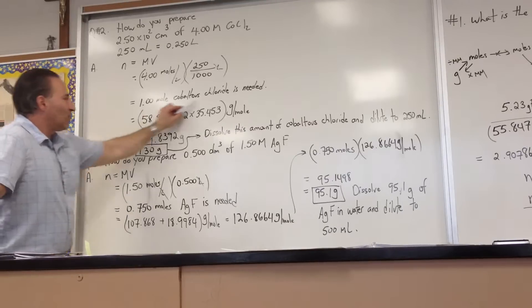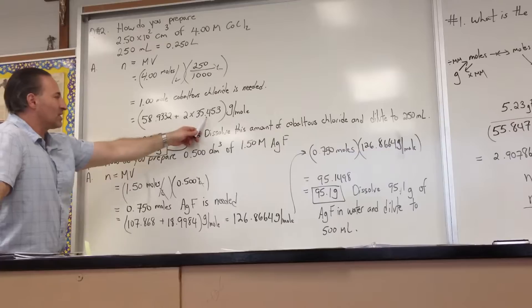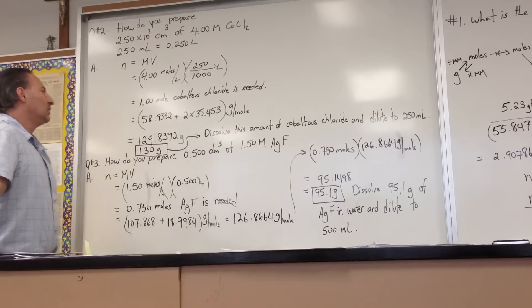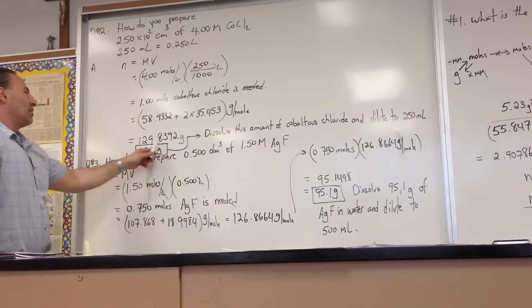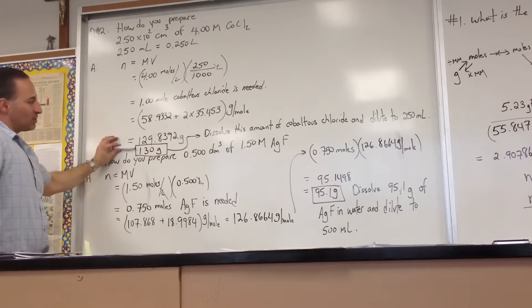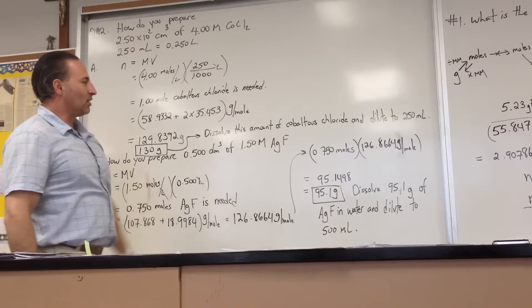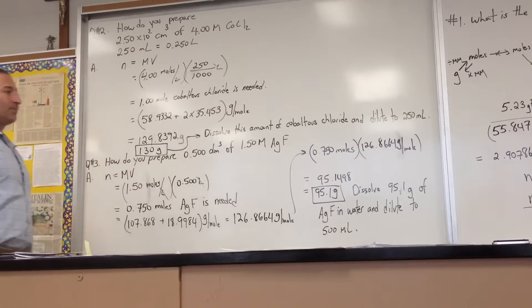We then find out how much one mole of cobaltis chloride weighs. Here's the mass of cobalt. There's the mass of chlorine times 2, and it turns out to 129.8392 in the calculator. We're only allowed to report three significant figures. So we say 130 grams of cobaltis chloride needs to be dissolved and diluted with water to 250 mL.